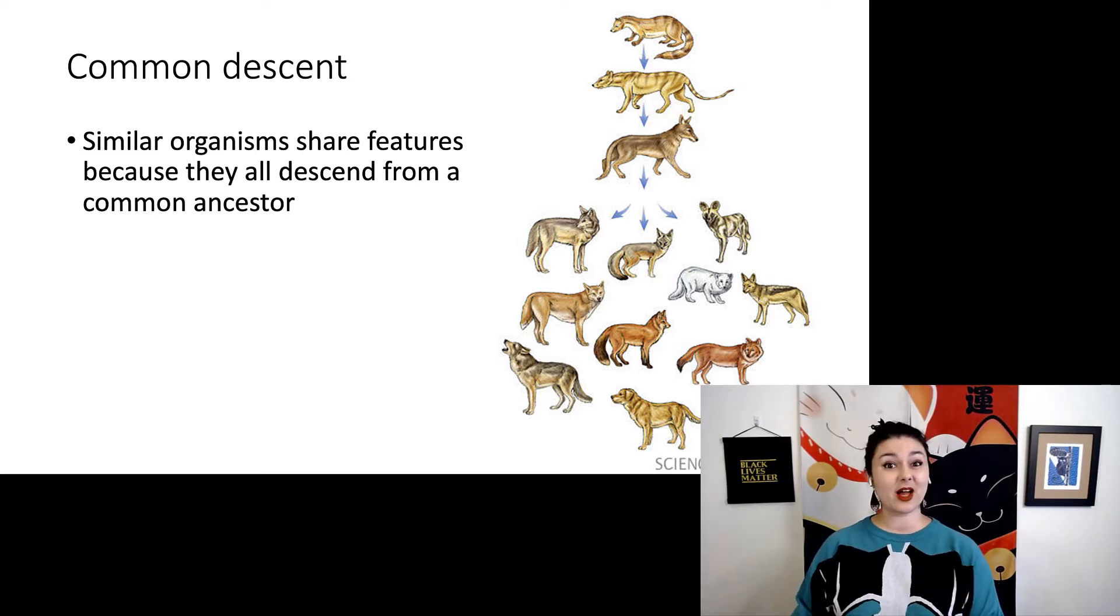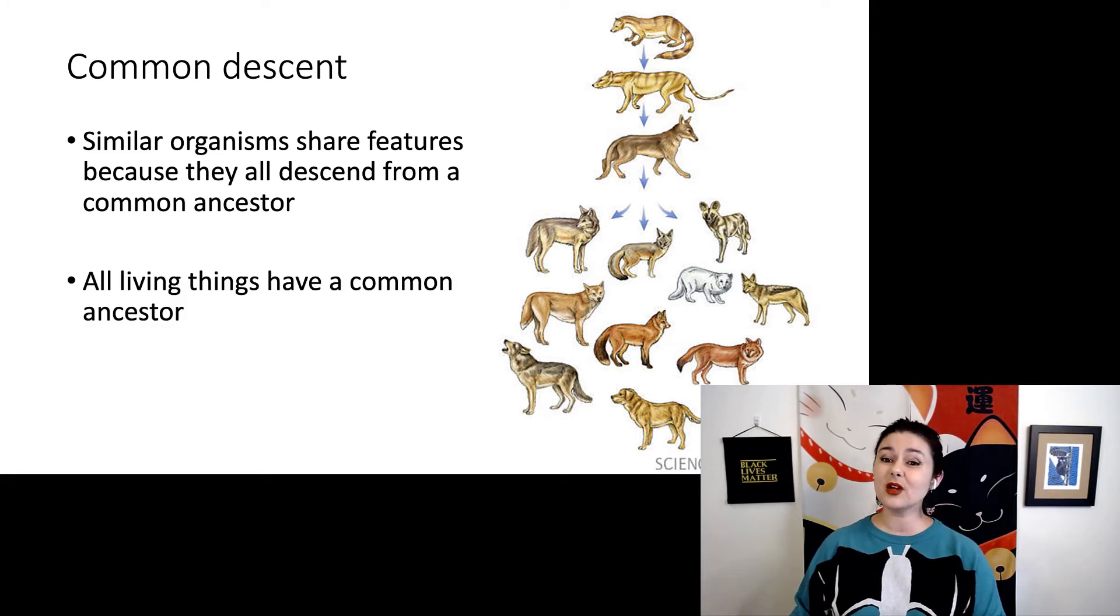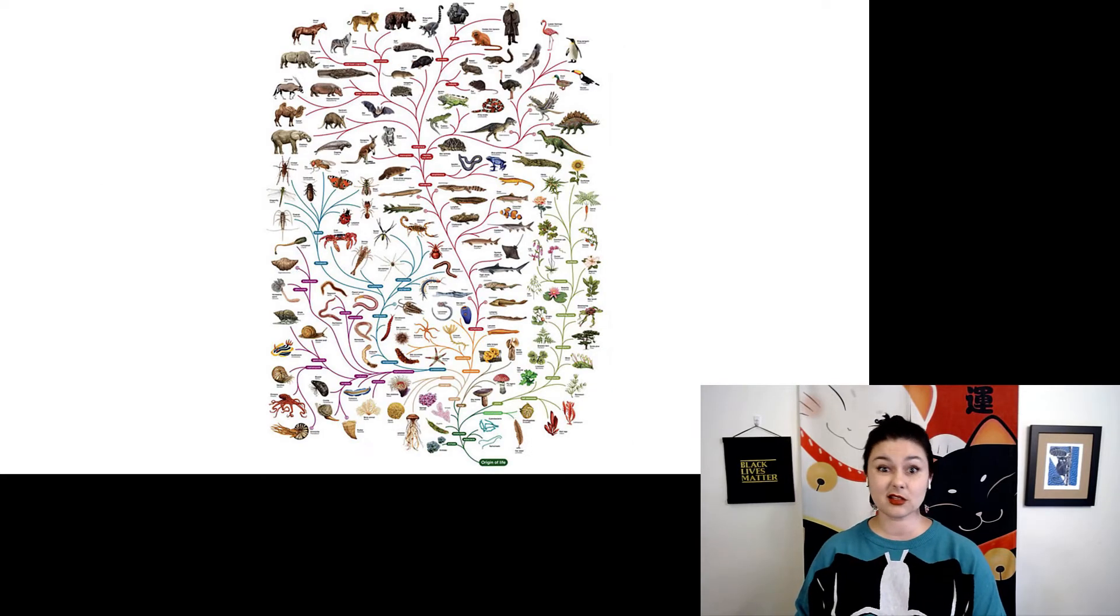If you take this back far enough, this also suggests that all living things have a common ancestor. Since this was first proposed, scientists have been trying to see if this holds up, and yes, it does. So far, there is evidence that there was a single origin for all life on Earth, though you do have to go back pretty darn far.